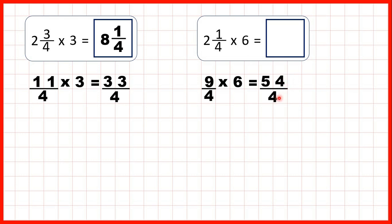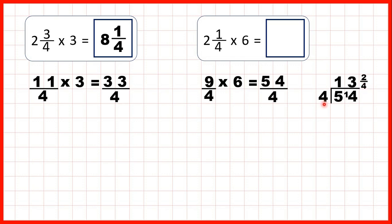A fraction is really a division, so we can turn this into a mixed number by dividing 54 by 4. 5 divided by 4 is 1 remainder 1, then 14 divided by 4 is 3 remainder 2, because 3 times 4 is 12 and we need 2 more to get to 14. We write the remainder 2 as our numerator and the denominator is 4, because that's our divisor — the number we're dividing by. So our answer is 13 and 2 quarters.